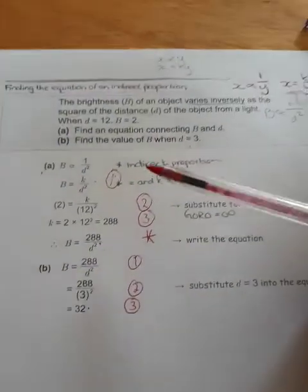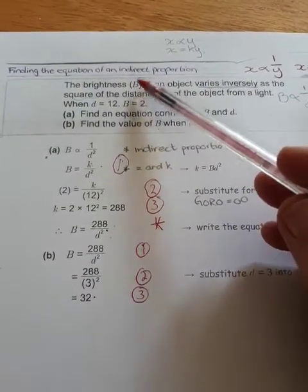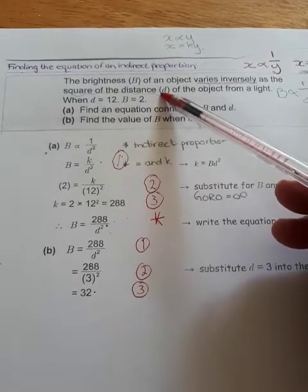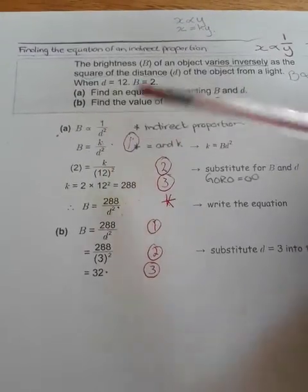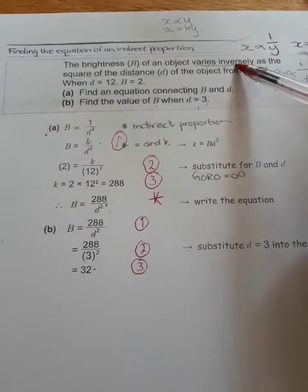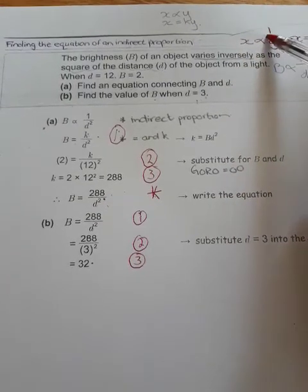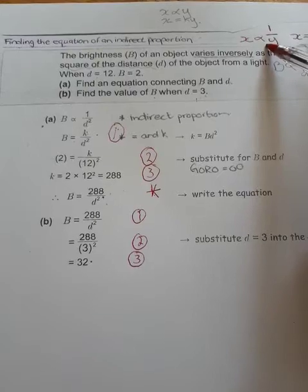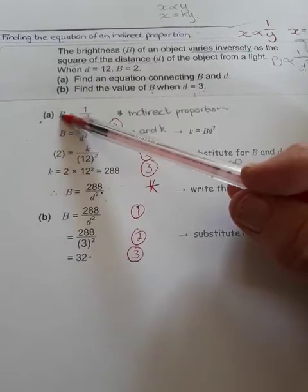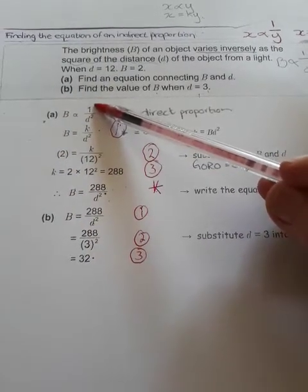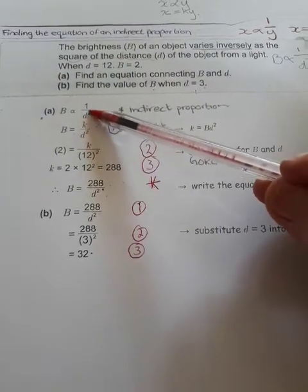So I'd like to go back to the original question, which is find the equation that connects capital B with small d. We will start by writing the indirect proportion, simply because they tell you it's an inverse proportion. So we start with x is proportional to 1 over y. And x, in this case, is the brightness. The brightness is inversely proportional to 1 over the square of the distance, so that's distance squared.